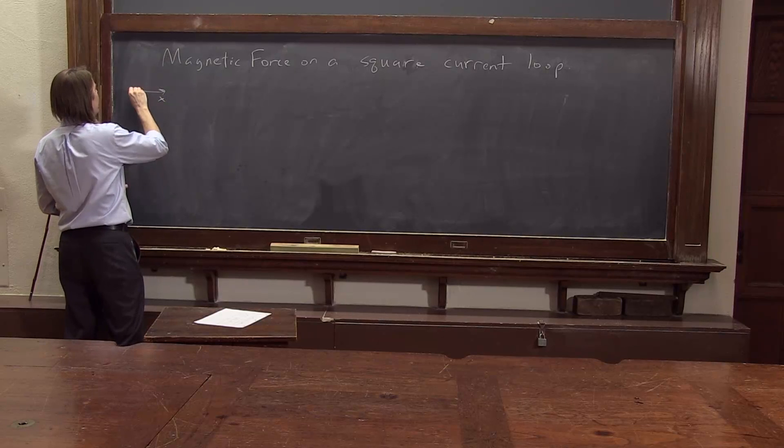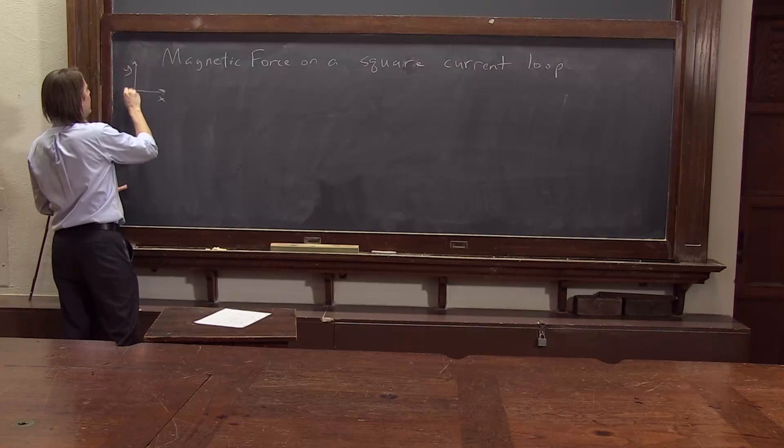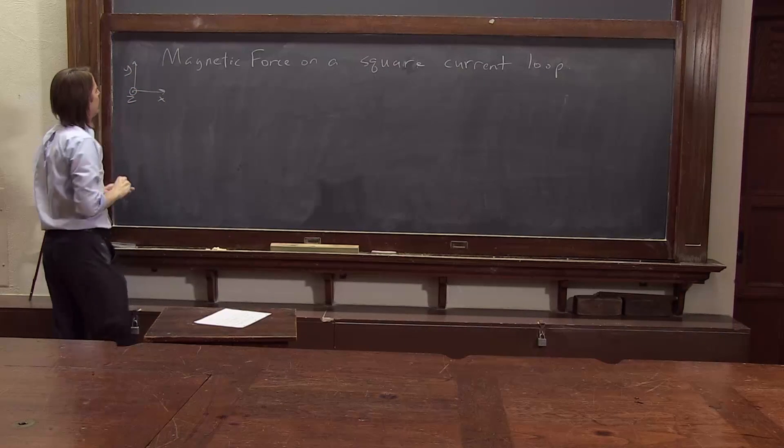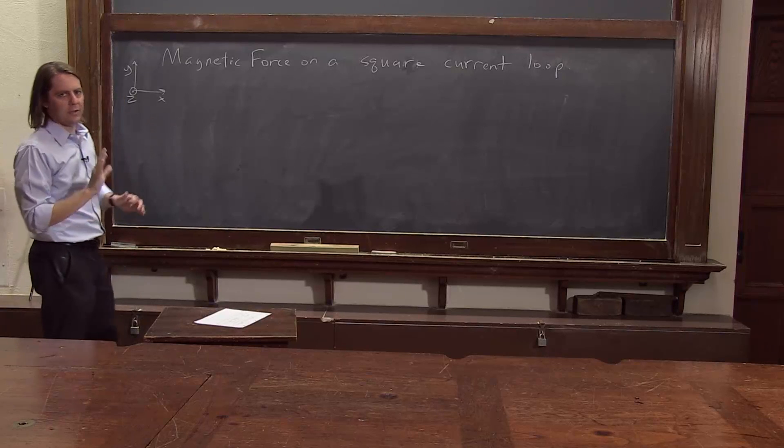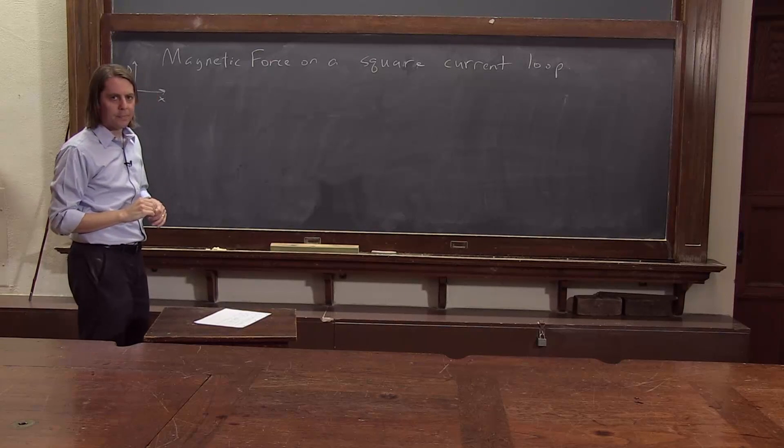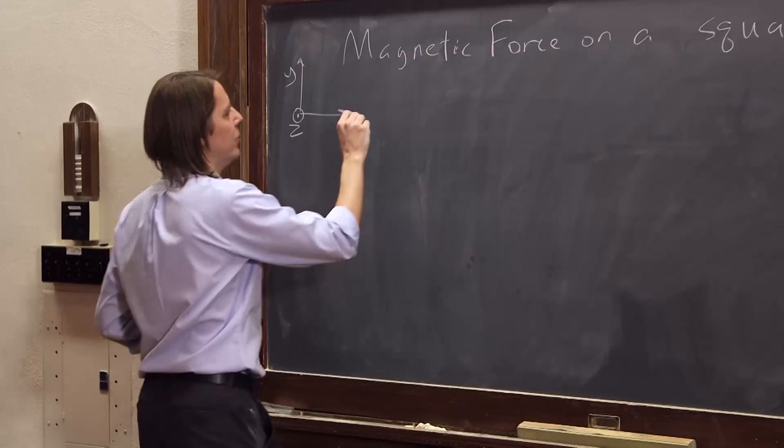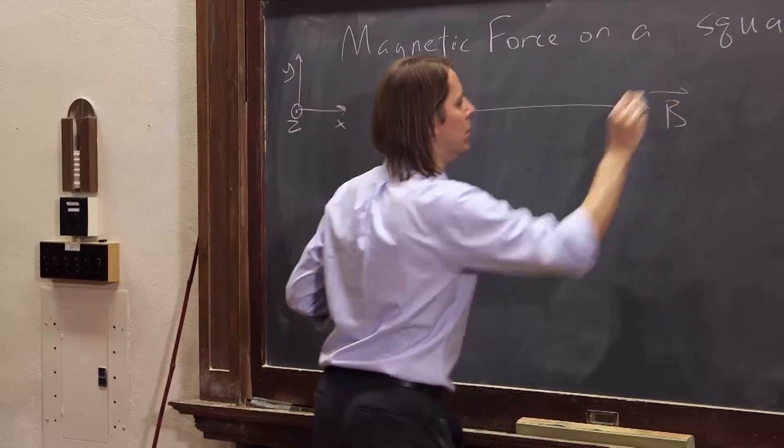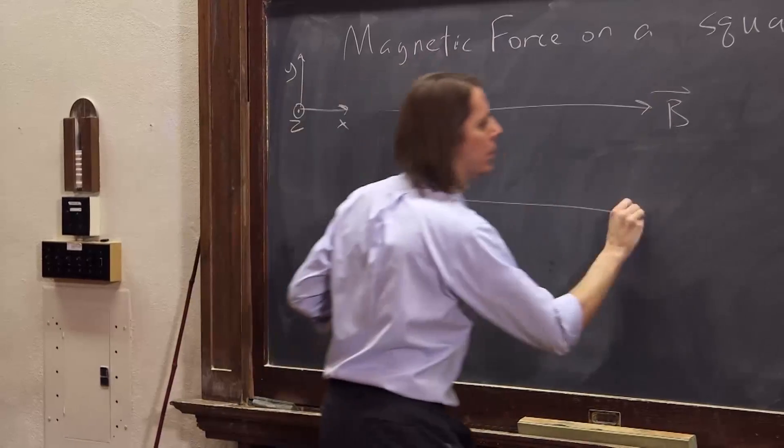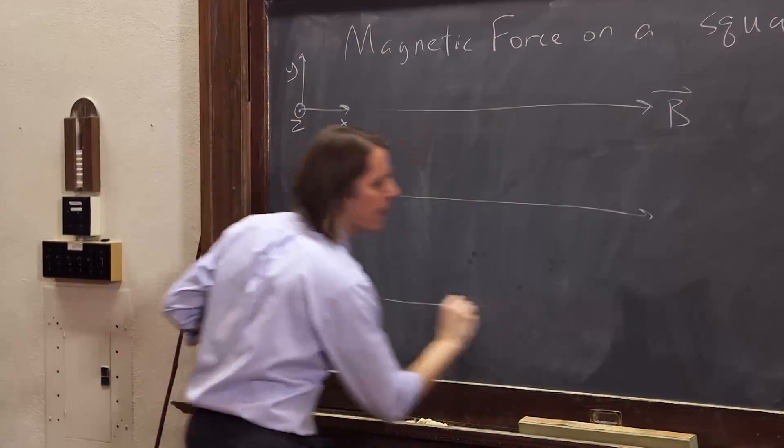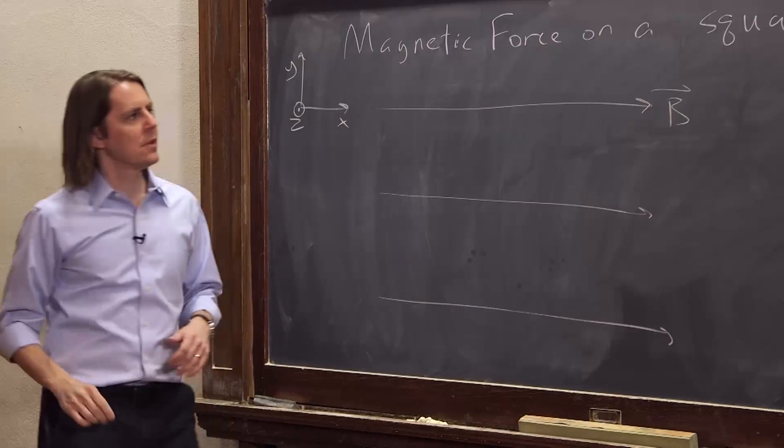So let's have X that way, let's have Y up, and let's have Z out. X cross Y is Z, so it is a right-handed coordinate system. Let's have a magnetic field pointing in the X direction. So uniform B field pointing this way.